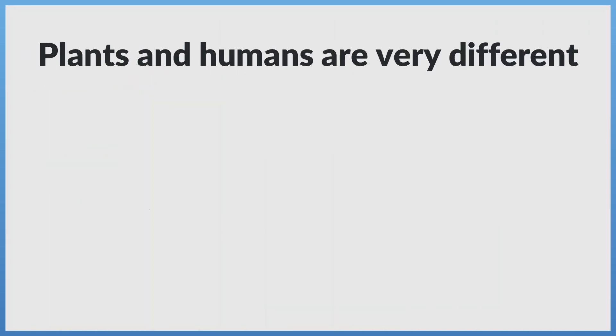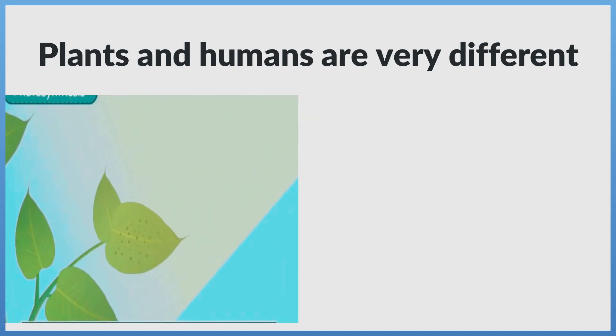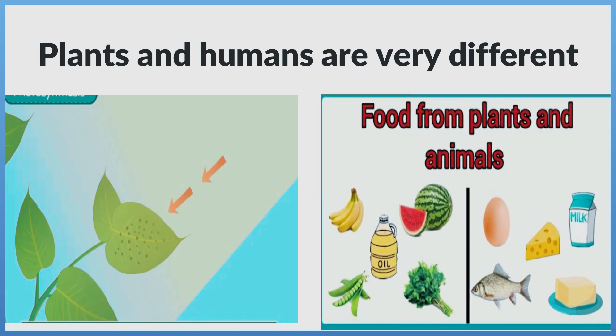Plants and humans are very different because plants use sunlight to make their own food from air and water. But humans get their food from plants and animals.